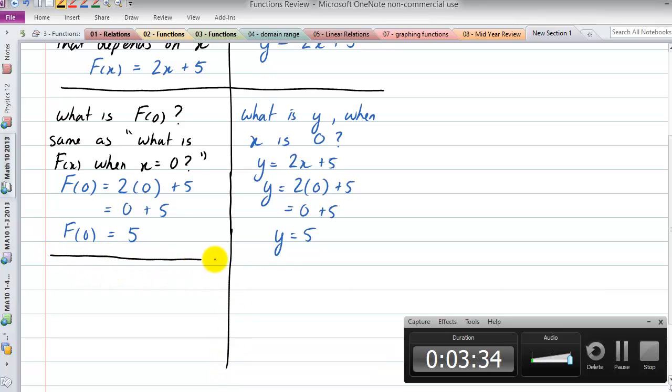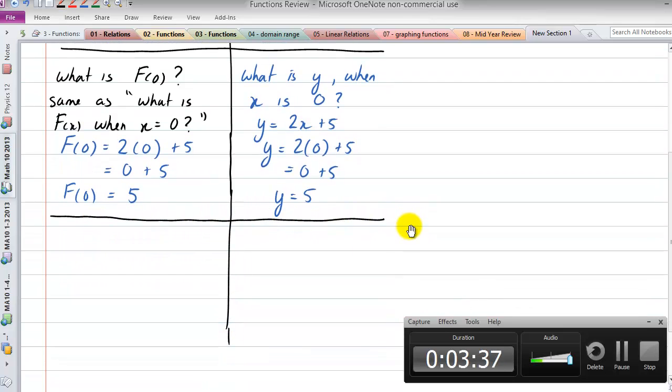Another thing that maybe gets confusing is if you're asked what is x when f(x) equals, I don't know, 10. So we could say that's like saying well f(x) equals 2x plus 5 and that equals 10. That's what we say right here. So then we say well that's saying 2x plus 5 equals 10.